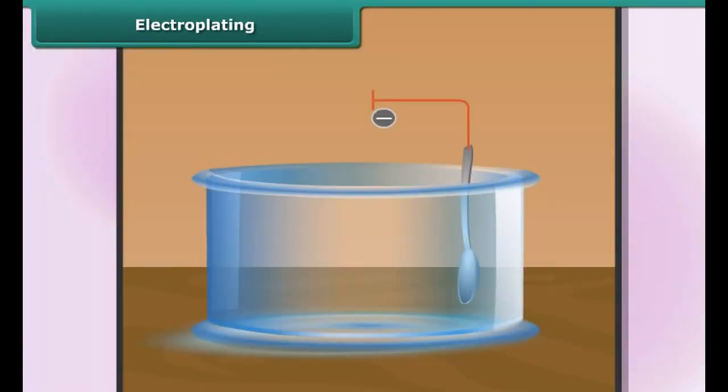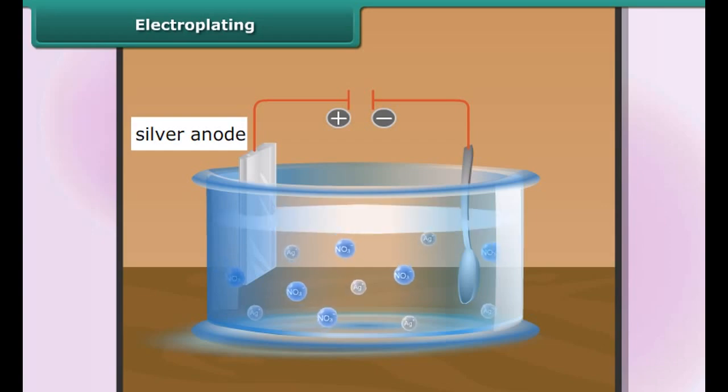Electroplating: It is common practice to coat articles made of cheap metals such as iron or steel with a thin layer of less reactive metal. A steel object, for example a spoon, is connected to the negative terminal of current source. The positive terminal is connected to the bar of the metal, for example pure silver.